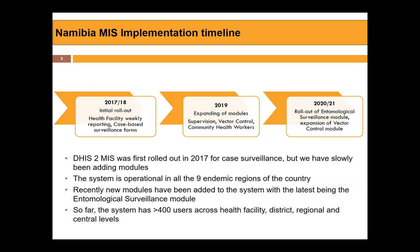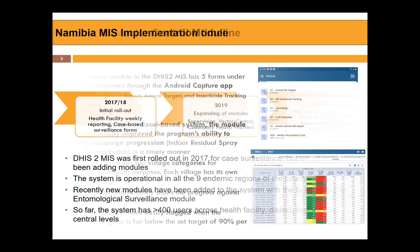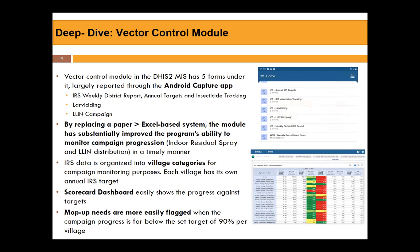For Namibia, implementing this malaria information system initially brought out health facility weekly reporting and case-based reporting, and from there it started including additional modules. Recently we just added the entomological surveillance module. So far the system has more than 400 users across facilities in malaria districts, and every region is able to use it up to the central level. The vector control module in the DHIS2 malaria information system has five forms under it and is largely reported through the Android capture app — including weekly reports, insecticide tracking, IRS up-setting data, and net distribution campaigns.